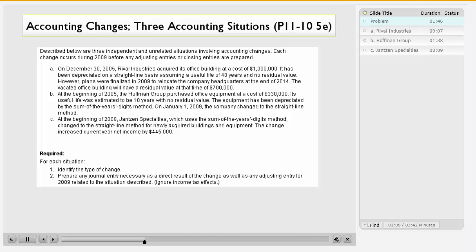C. At the beginning of 2009, Janssen Specialties, which uses the sum of years digits method, changed to the straight-line method for newly acquired buildings and equipment. The change increased current-year net income by $445,000.